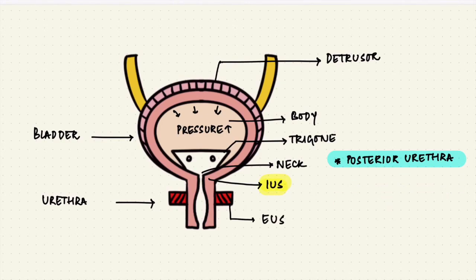This is the external urethral sphincter. This is voluntary versus the internal sphincter which was involuntary. So it's under the control of the higher centers in the brain and the brain stem.